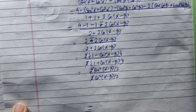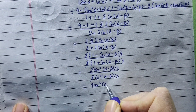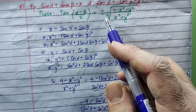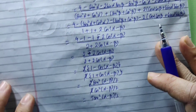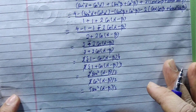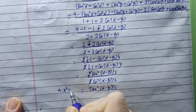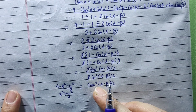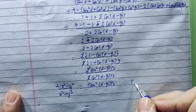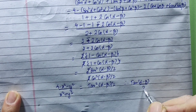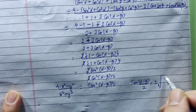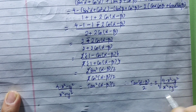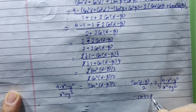This gives tan squared((alpha minus beta) by 2) equal to (4 minus x square minus y square) by (x square plus y square). Taking the square root, tan((alpha minus beta) by 2) is equal to plus minus under root of (4 minus x square minus y square) by (x square plus y square). Therefore, LHS equals RHS. Proved.